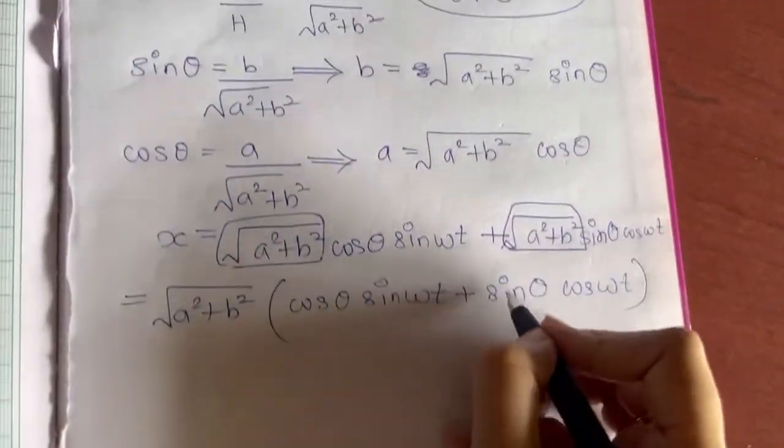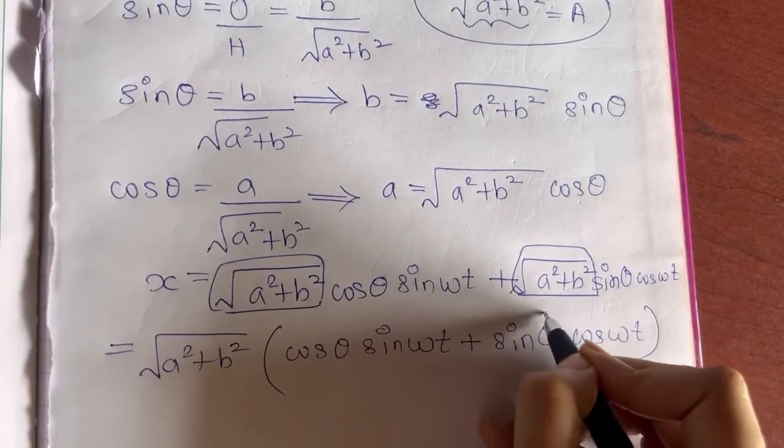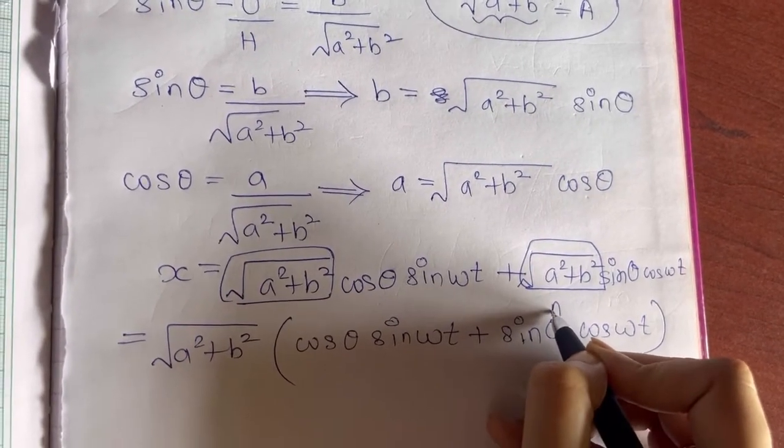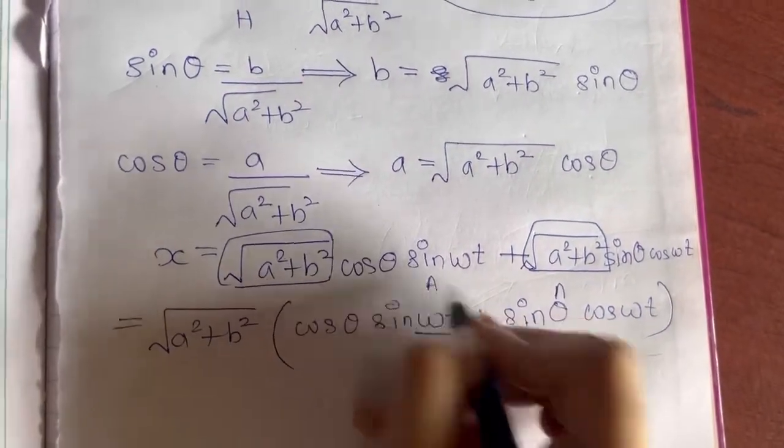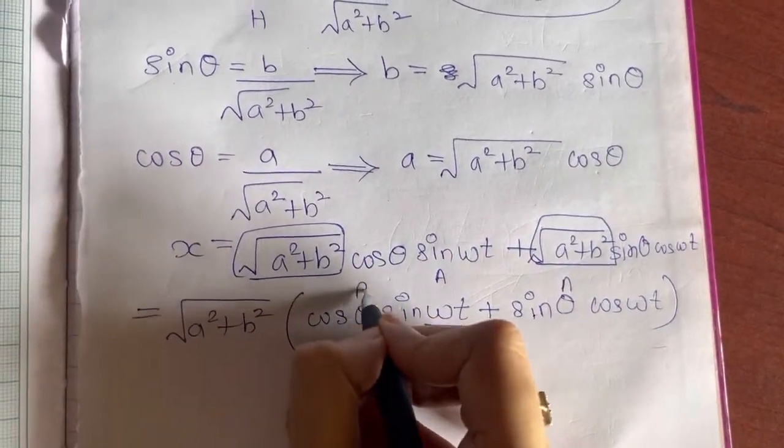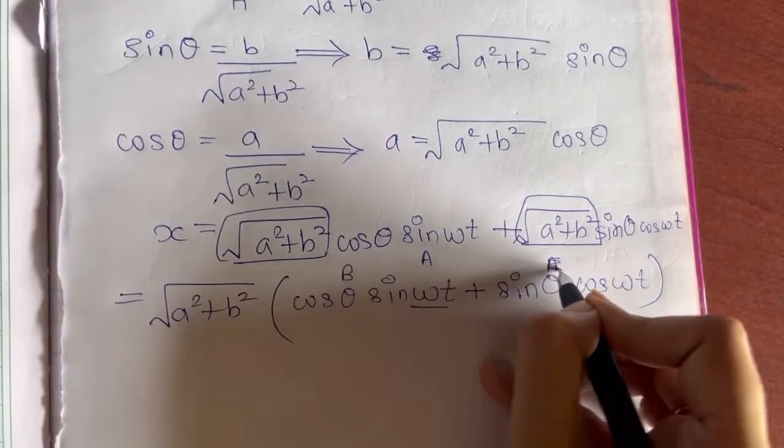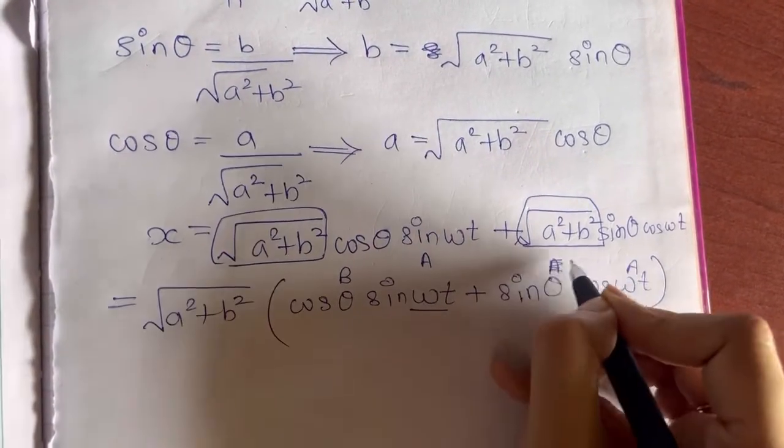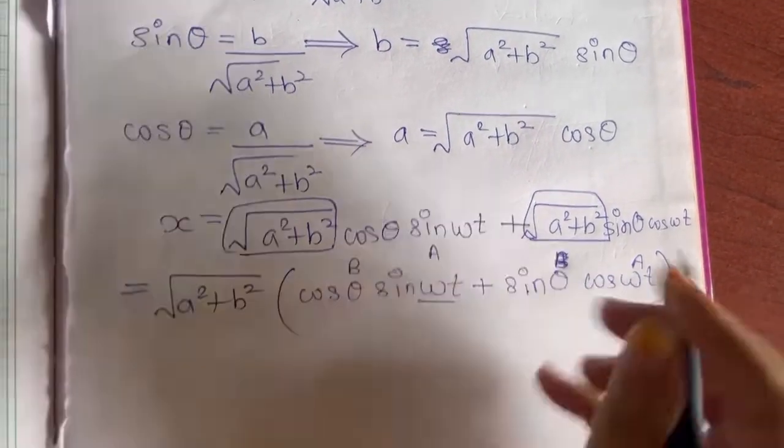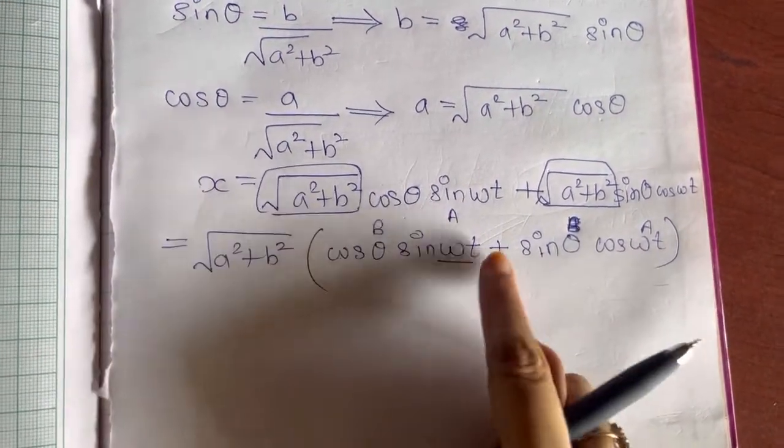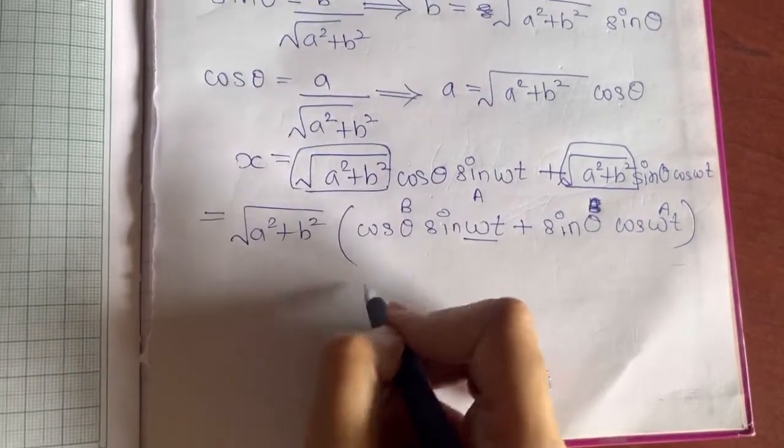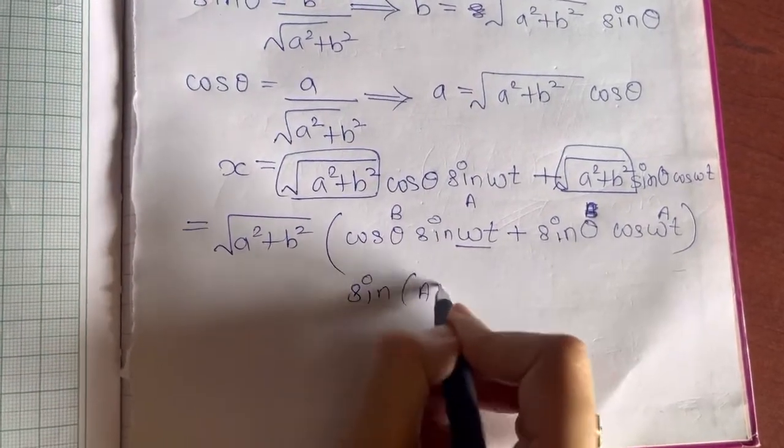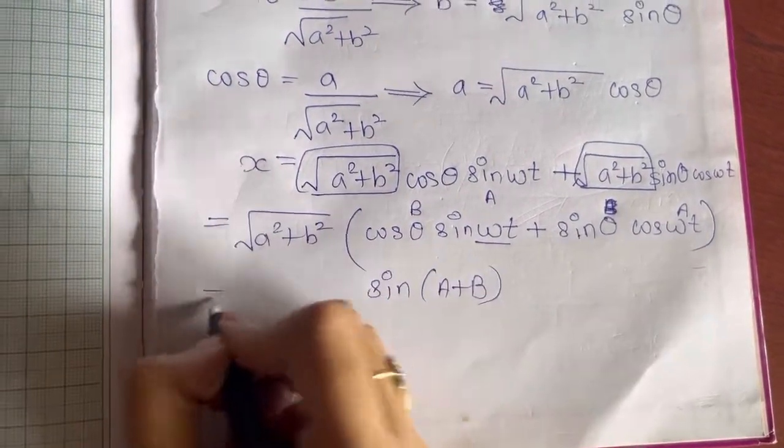If I see this as, I substitute θ as A, or I can also take ωt as A, that would be better, and θ as B. So it is sin A cos B + cos A sin B, that is equal to sin(A + B).